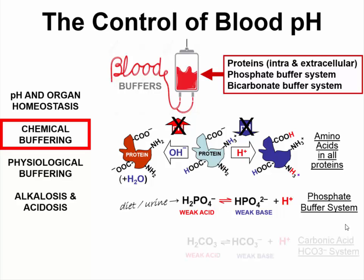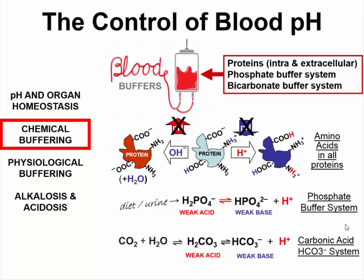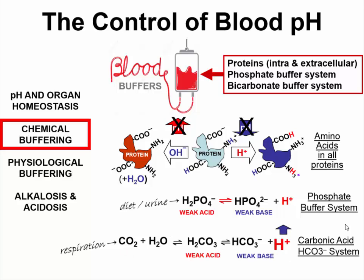The third buffering system of the blood is the carbonic acid bicarbonate system. This is almost identical to the phosphate buffer system in that there's a weak acid — carbonic acid — which can readily dissociate into bicarbonate and hydrogen ions. However, what's different is that the carbonic acid is produced through respiration. Any rise in pH through a fall in hydrogen ion concentration is met with resistance through a change of the equilibrium to the right, reducing the partial pressure of carbon dioxide dissolved in the blood, until the hydrogen ion concentration is restored. Conversely, any rise in hydrogen ion concentration causes a shift in the equilibrium to the left, ultimately increasing the partial pressure of carbon dioxide dissolved in the blood, until the hydrogen ion concentration — and therefore the pH — is restored back to normal levels.